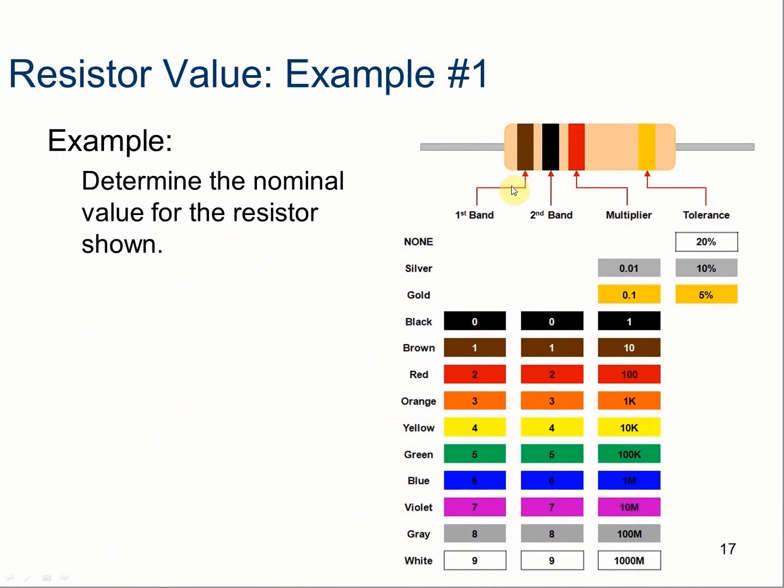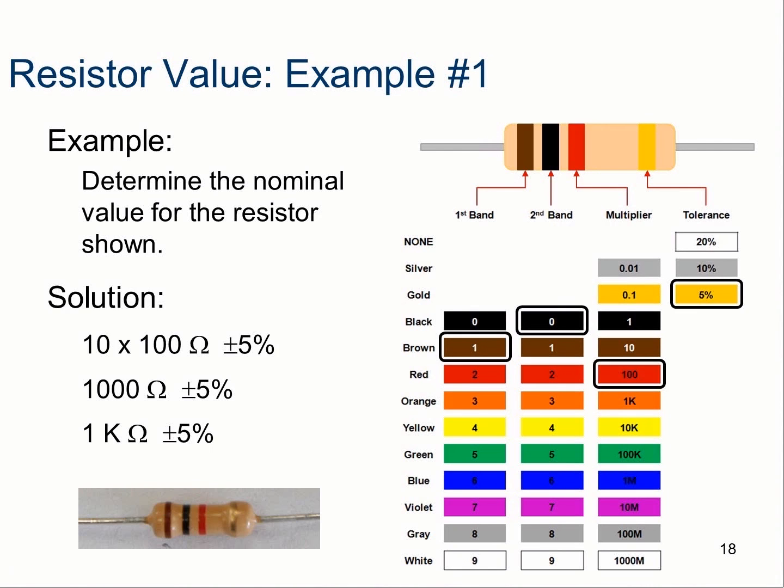So, let's take a look at some examples. So, here we have a brown, a black, and a multiplier of red. Well, the brown is 1. The black is 0. So, that's 10, right? 1 and a 0. And then the third band, the multiplier, is red, or 100. So, if we have a 1, a 0, and then two more zeros, you got 1000. And we can see that here. So, 10 times 100, plus or minus 5%, because of the gold tolerance is 5%, is 1000 ohms, or 1 kilo ohm.